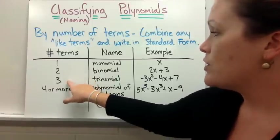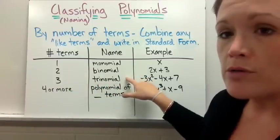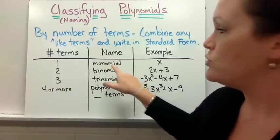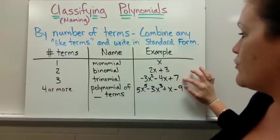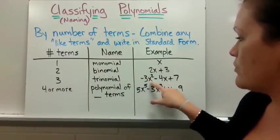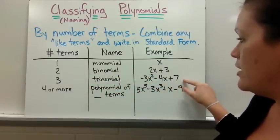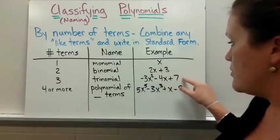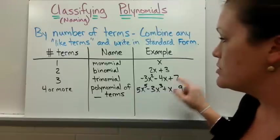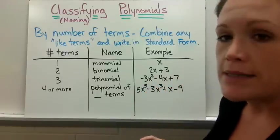If we have three terms it's called a trinomial. You can remember like a bicycle has two wheels and a tricycle has three. For example we'd have negative 3x squared minus 4x plus 7. Notice you can't combine any of that so they still are all by themselves but in the same polynomial there are three separate terms separated by plus and minus.